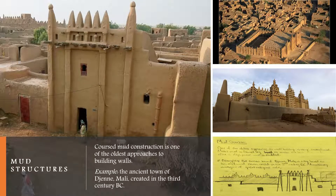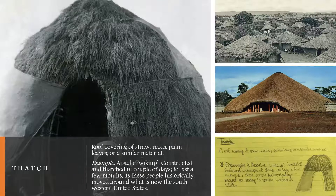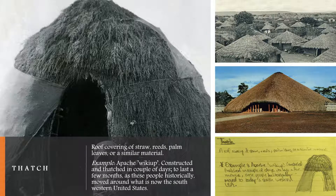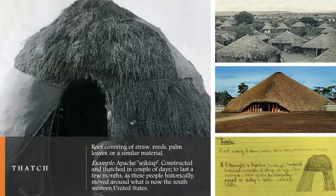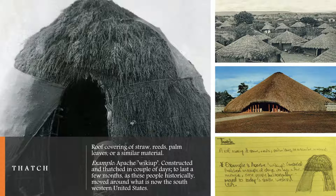The fourth and final type of prehistoric structures is the thatch. A thatch is a name given for a roof covering of straw, reeds, palm leaves, and similar materials. A famous thatch house is called an Apache, which is a traditional accommodation space that is dome-shaped in structure, and sometimes called a wickiup. It's usually built out of oak or willow poles that are driven into the ground or tied together with strands of yucca, and covered with brush, usually bare grass.